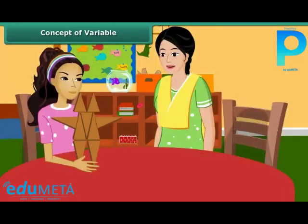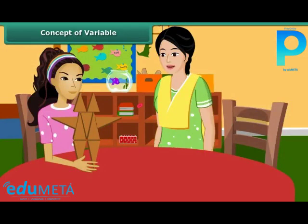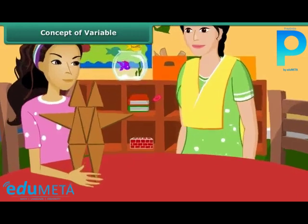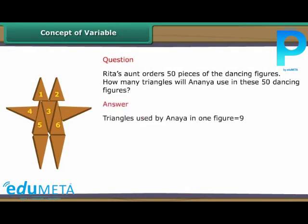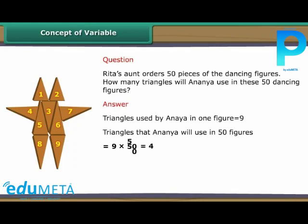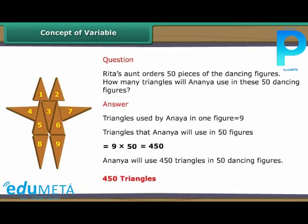Rita's aunt notices the dancing figures and likes them so much that she orders 50 such pieces. How many triangles will Ananya use in these 50 dancing figures? Ananya uses 9 triangles in one figure. Therefore, in 50 figures, Ananya will use 9 into 50, which equals 450 triangles.